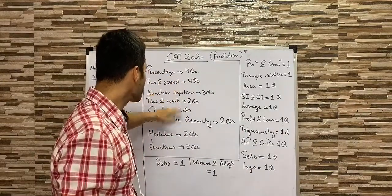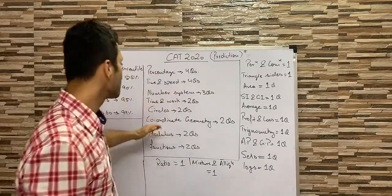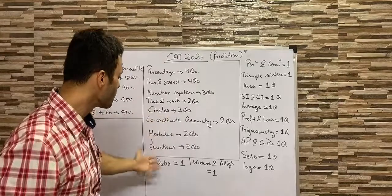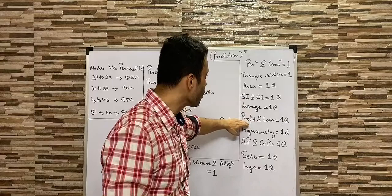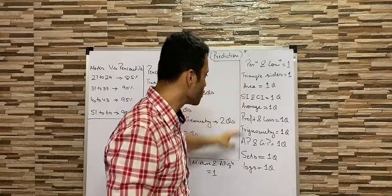For example, percentage, time and speed, maybe a little bit of number system, time and work, circles, ratio and proportion, simple interest, compound interest, average, profit and loss, permutation combination, probability.